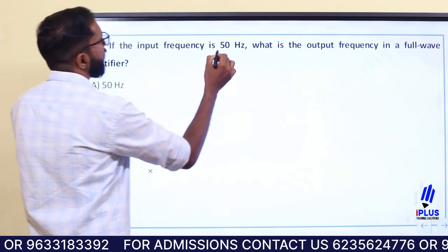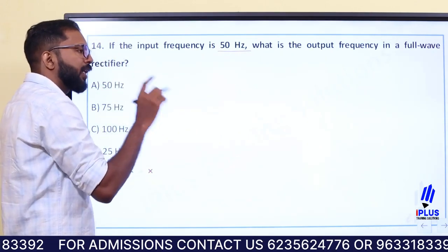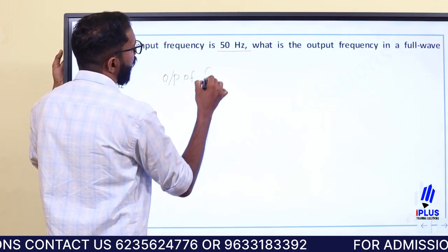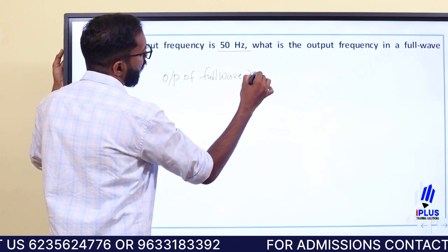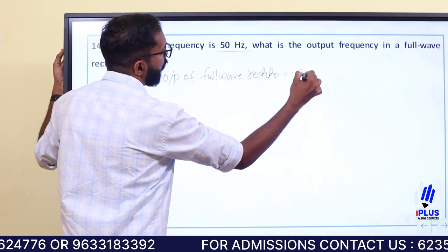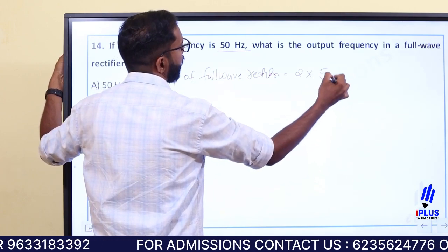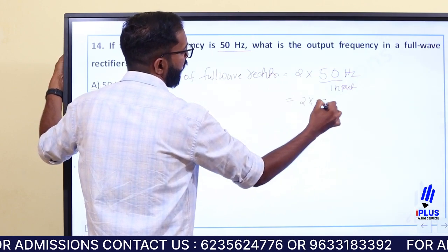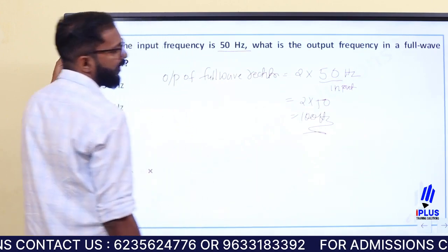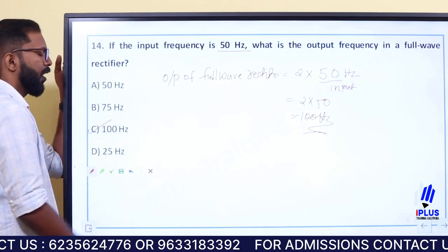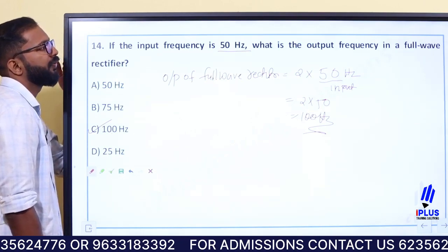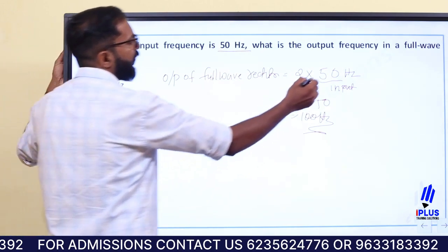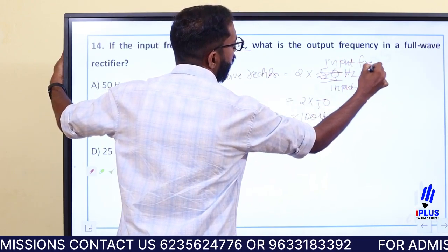The input frequency is 50 hertz. For a full wave rectifier, the output frequency equals 2 times the input frequency, that is 2 into 50 equals 100 hertz. The output frequency of a full wave rectifier is equal to 2 times the input frequency, giving 100 hertz.